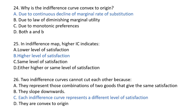Next question: why is the indifference curve convex to its origin? The indifference curve is convex to its origin due to the continuous decline of the marginal rate of substitution. As the consumer substitutes more of one good for another, the MRS continuously declines, making the curve convex. So the answer will be A.